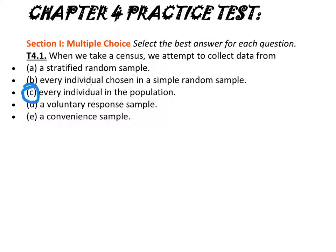Blocking is when you take an experiment. Letter B, every individual chosen in a simple random sample would be from just a sample and not a census. A voluntary response sample are those only that choose to respond. A convenient sample is taking a sample in an easy location, for example, a shopping mall.